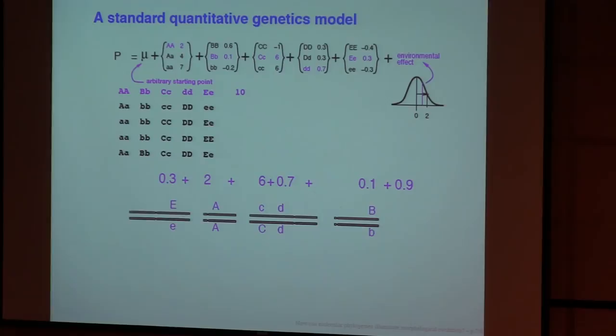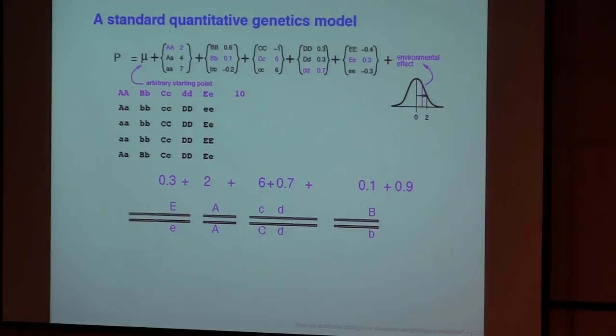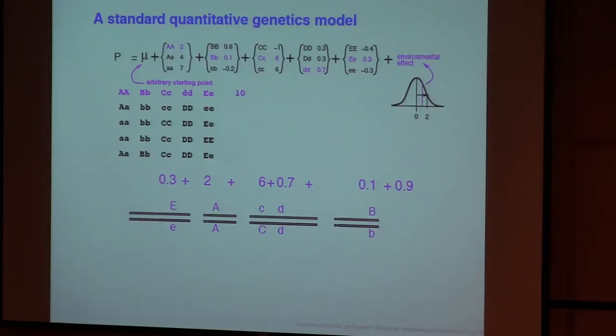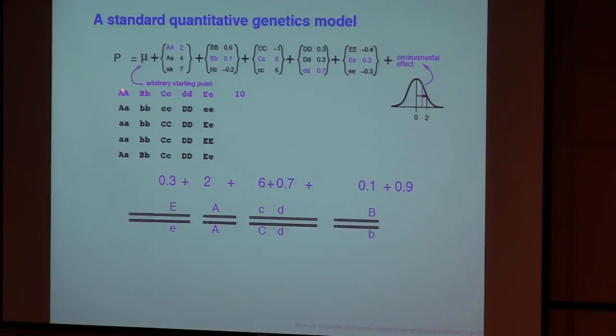So, what Fisher said is, let us make a simple model, a simple model which has become the standard model of quantitative genetics. And let us imagine that this character starts with a numeric, that the value of the character in a particular individual, starts with an arbitrary starting point, and then each gene adds something to the character depending on the genotype. So here's a scheme for this gene, little a, little a adds seven, a heterozygote adds four, big A, big A adds two. And you imagine that you somehow know this scheme, of course in reality you don't.